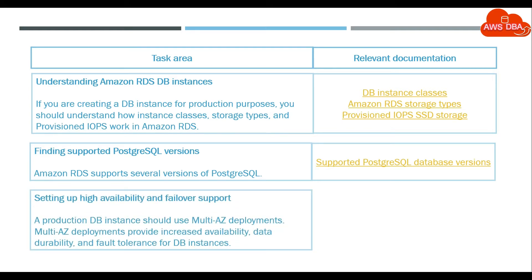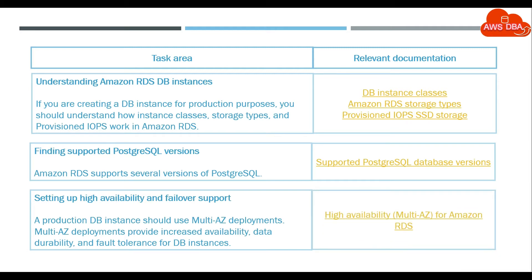Setting up high availability and failover support. A production DB instance should use multi-AZ deployments. Multi-AZ deployments provide increased availability, data durability, and fault tolerance for DB instances. See: High availability, multi-AZ, for Amazon RDS.